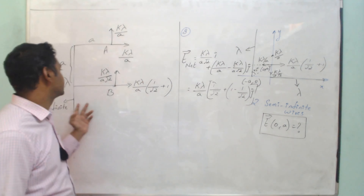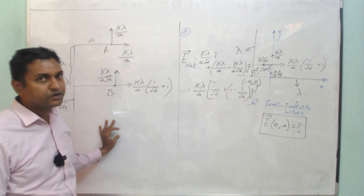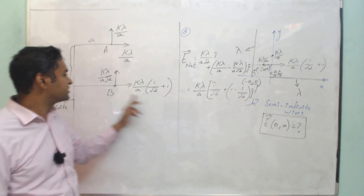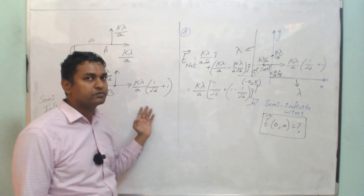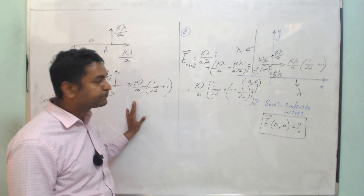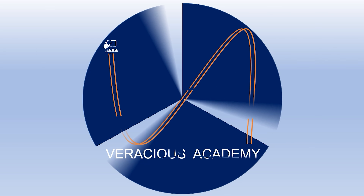So the resultant net electric field at (0, a) is: along î-cap, k·lambda/(a·√2) î, and along ĵ-cap, k·lambda/a minus k·lambda/(a·√2) ĵ. Simplifying, this gives k·lambda/a·(1 − 1/√2) ĵ.